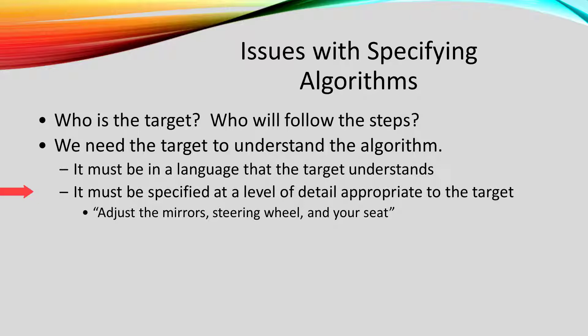Similarly, our algorithm has to be specified at a level of detail appropriate to the target. Think about this instruction: adjust the mirrors, steering wheel, and your seat. This instruction is fine for an experienced driver. But if the target just got his learning permit, we would probably need much more detail about how to make those adjustments.